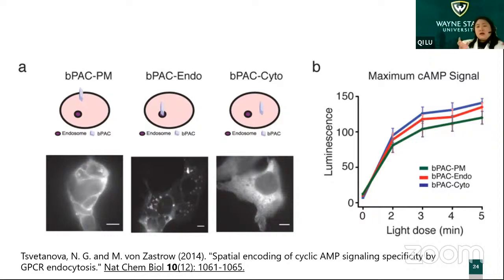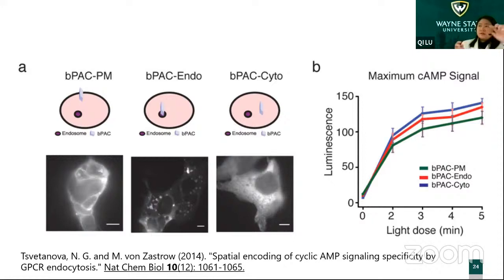This targeted sequence means we can specifically increase cyclic AMP concentration in some specific areas at the subcellular level. Then looking at the cell's reaction will tell us which parts of the signal are related to some specific function of other proteins.